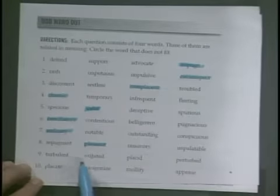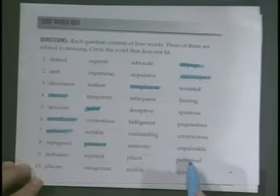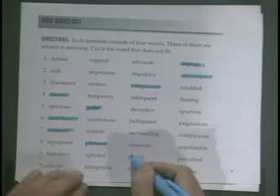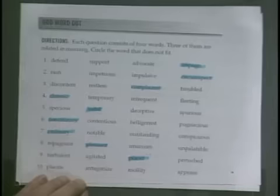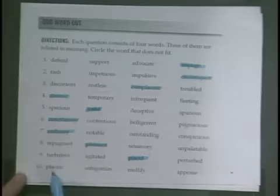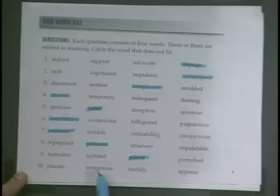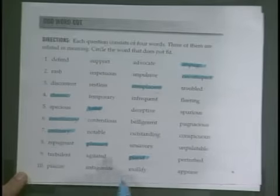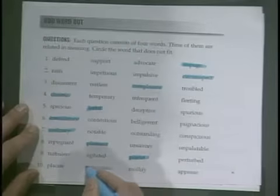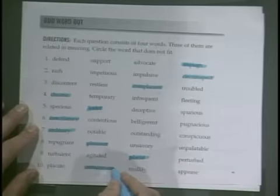Turbulent, agitated — these mean the same thing; perturbed is similar; placid means you're calm, all of the other ones mean not calm, so placid is the odd one out. Placate, antagonize, mollify — antagonize and placate are opposites; mollify is the same as placate; appease is the same as mollify — these mean to please; antagonize means to make worse, to bother.